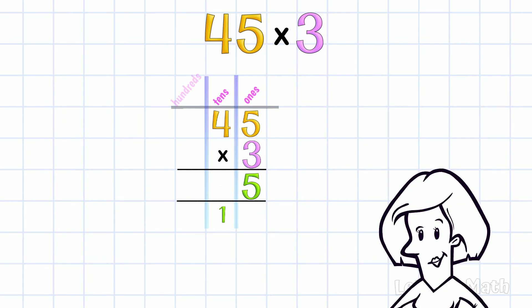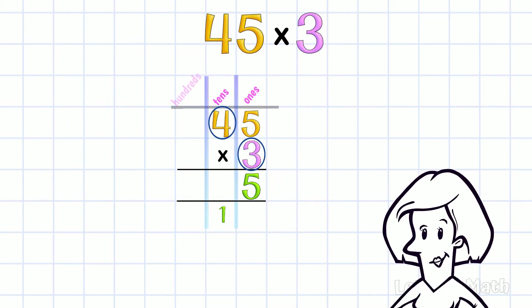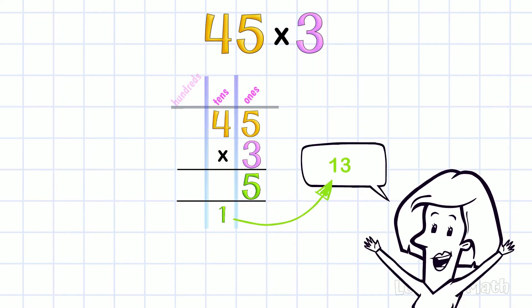Next, we multiply the tens digit: 4 × 3, that's 12. And we have to add in this one, so that is 13!